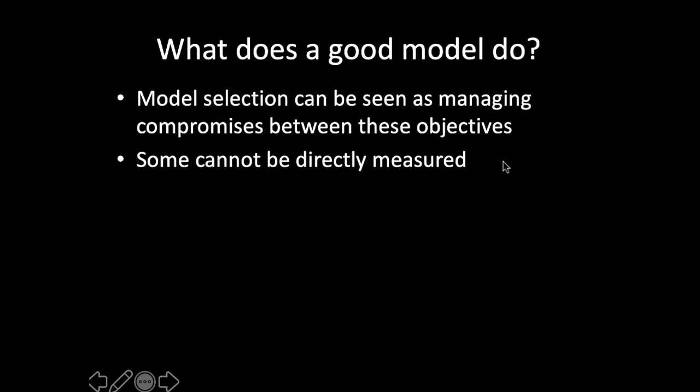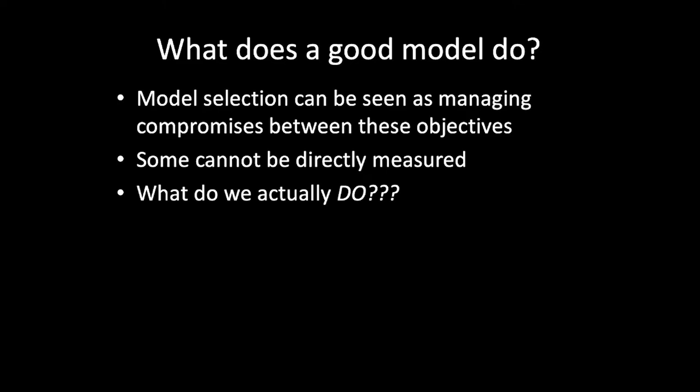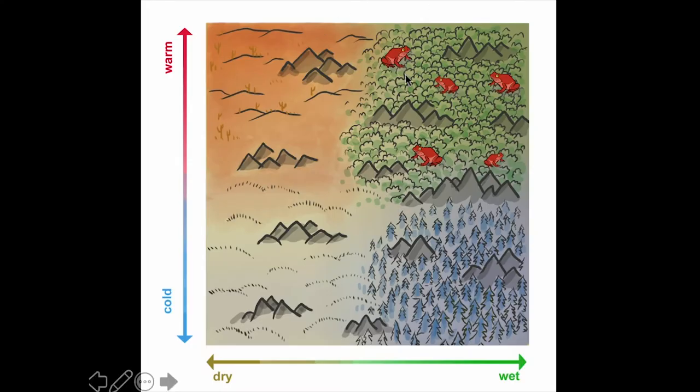In many cases we're basing our model selection on an assumption — a formalized hope — that evaluating on the things we can observe is actually related to our model's performance on the things we cannot observe. That assumption can be quite problematic. We want to select a model that optimizes the aspects of performance that we need for a specific decision or empirical study. So what do we actually do as opposed to what we should do? Primarily what we do is use a thing called discrimination accuracy.